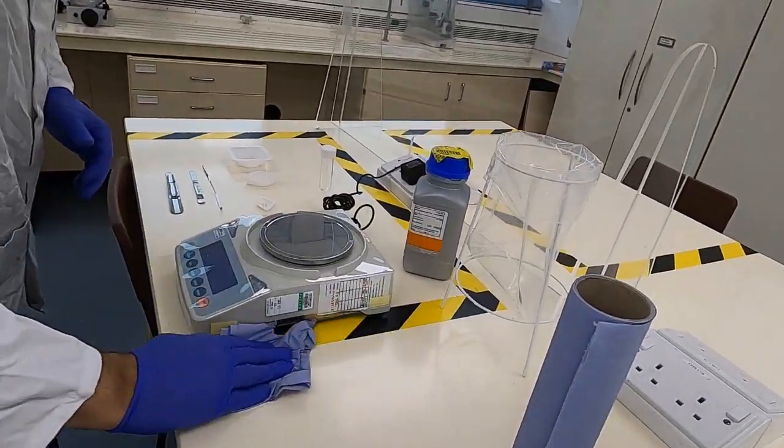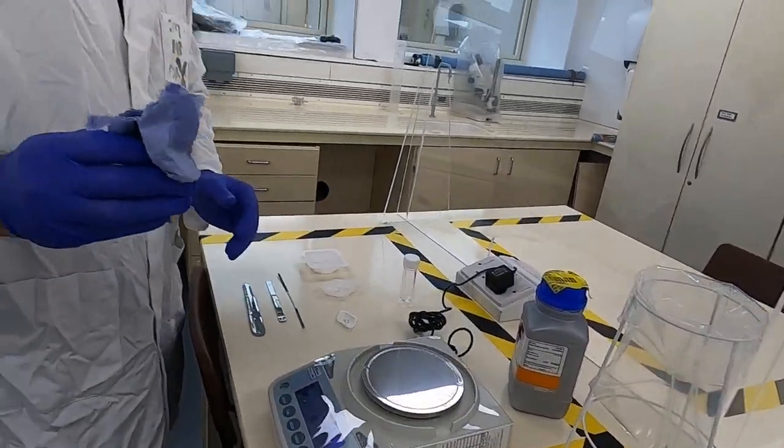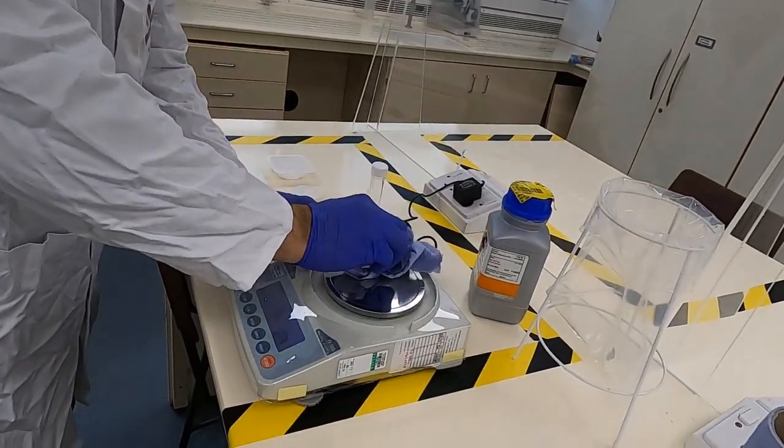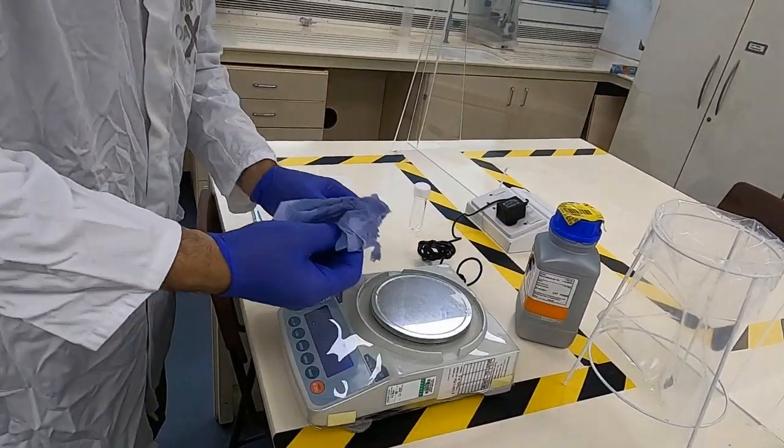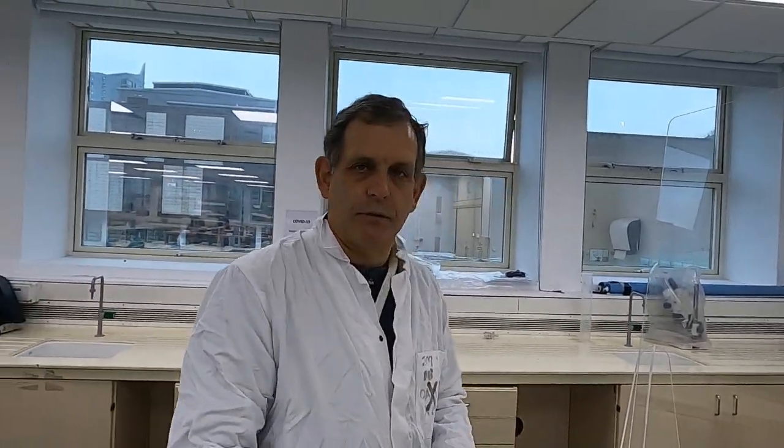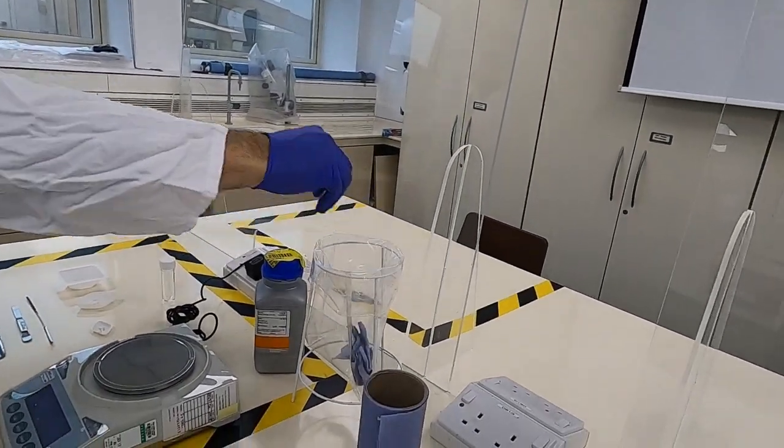This slightly damp blue towel, what we're going to do is wipe the area so that it removes any potential chemicals that might have been left over from the previous user. I'm going to wipe the area and very gently wipe the top surface of the balance.